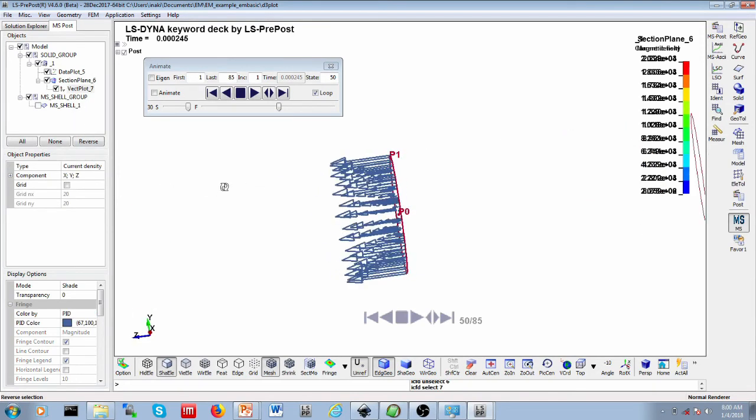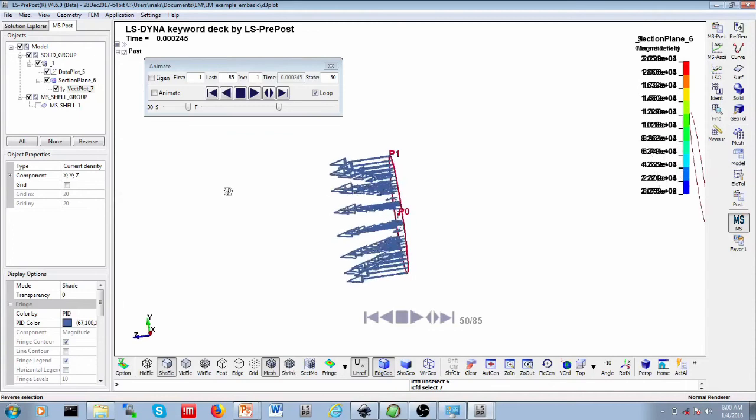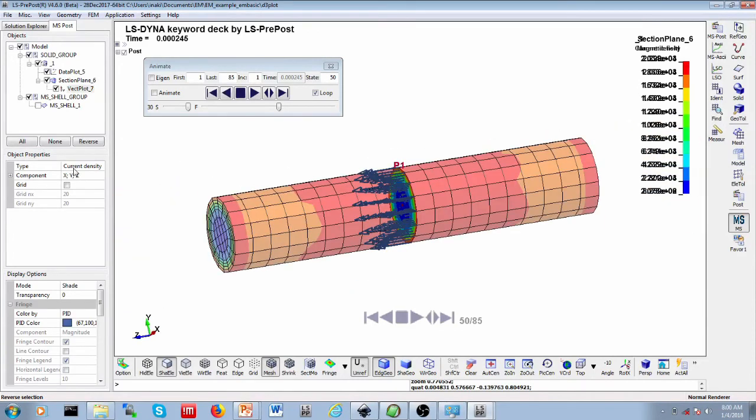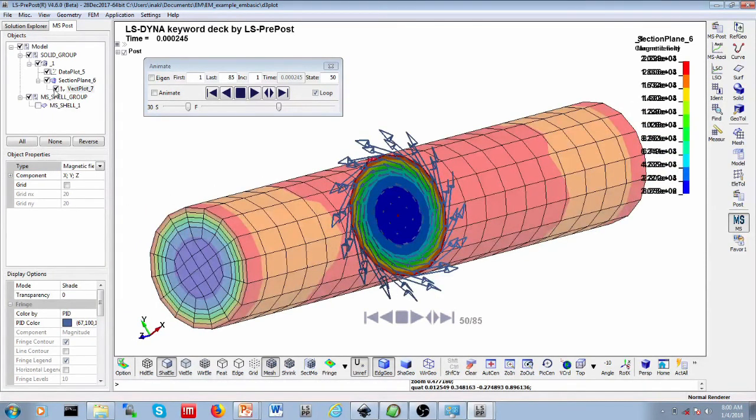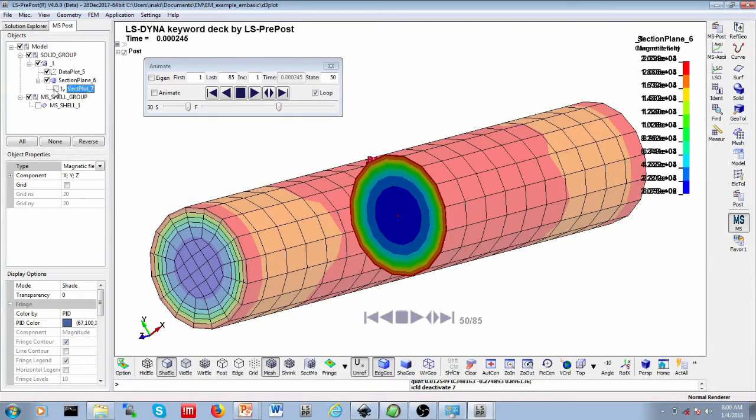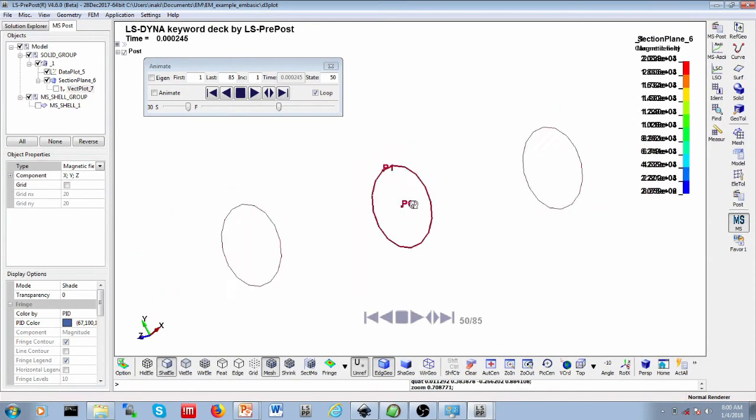If I display some vectors here, you see those are the vectors of the current density going from inlet to outlet. And then here those are the vectors of the magnetic field turning around. So a magnetic field is being generated in the conductor.